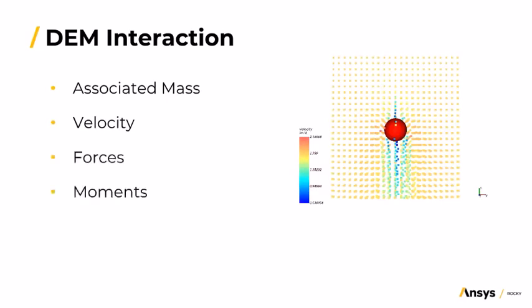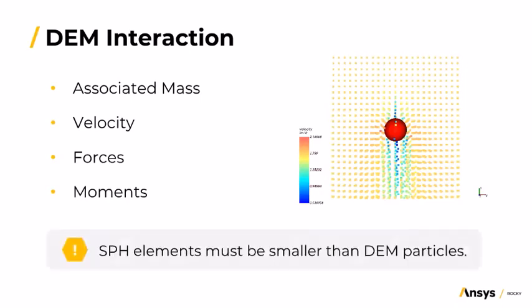Given that DEM computes velocity, it also computes forces and moments applied to these interior SPH elements and transfers them to the DEM particle. It's important to notice that this approach does have a main limitation, in which SPH elements must be smaller than DEM particles.